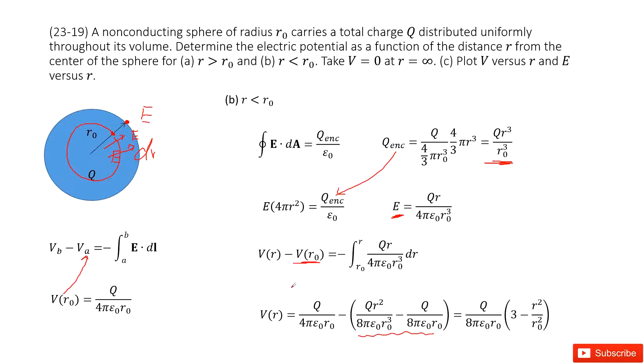And then V at r0. So at r0, what is V? From the previous part, from part A, we can get the potential at r0 equal to this term. So input it. We get the answer there.